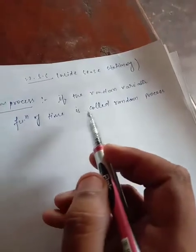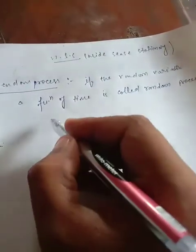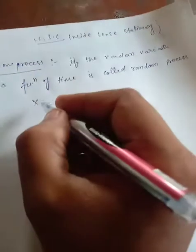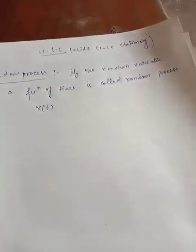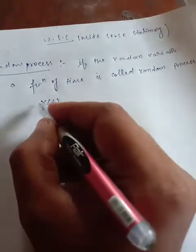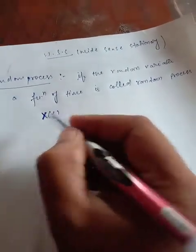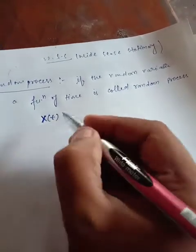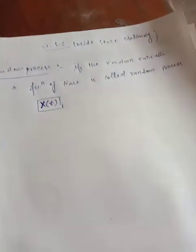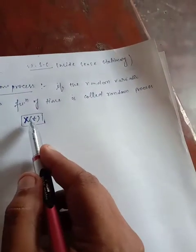If x is a random variable and it is indexed by time, that is called a random process. Now, when will we say a random process is a wide sense stationary process? A random process is called wide sense stationary if the following conditions are satisfied.